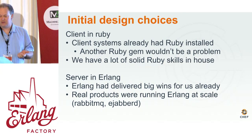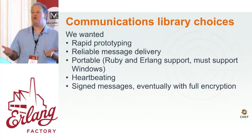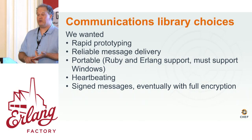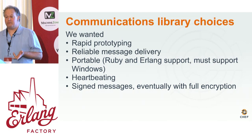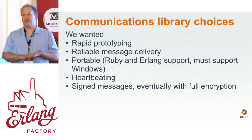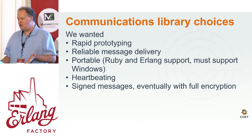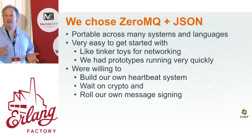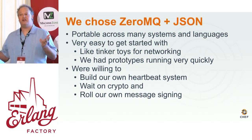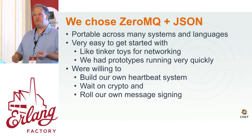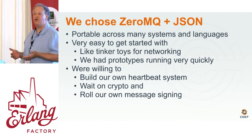The question was: we have the client, we have the server — how do we wire them together? We wanted rapid prototyping, reliable message delivery, portability, both Ruby and Erlang versions, Windows support, a laundry list of other operating systems, heartbeating, and signed messages with eventual full encryption. We eventually chose 0MQ and JSON messages. It turned out to be portable, very easy to get started with — like Tinker Toys for networking. We had prototypes running within a week or two, and once it started working there was momentum to stop looking.